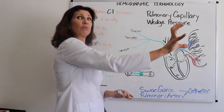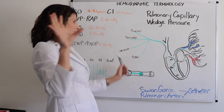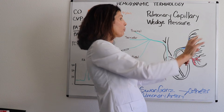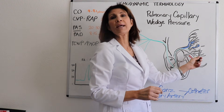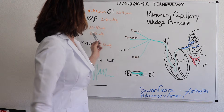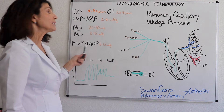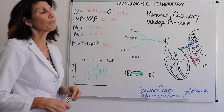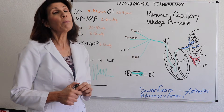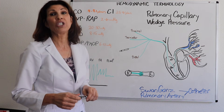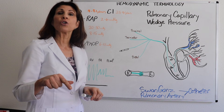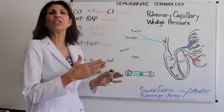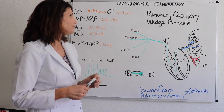Once wedged, the catheter can no longer sense the right heart behind it — it can only sense the pressures in front of it, which reflect the left side of the heart. That is the pulmonary capillary wedge pressure, with a normal value of 6 to 12 mmHg. The wedge pressure becomes less useful in pulmonary hypertension — in that case, you need to insert a left atrial line directly into the left side of the heart.